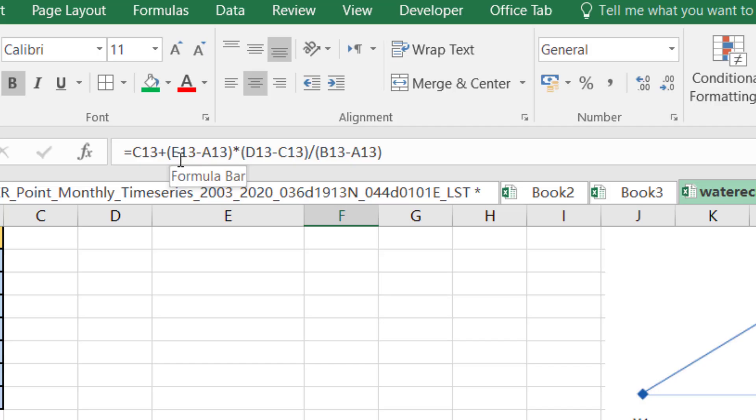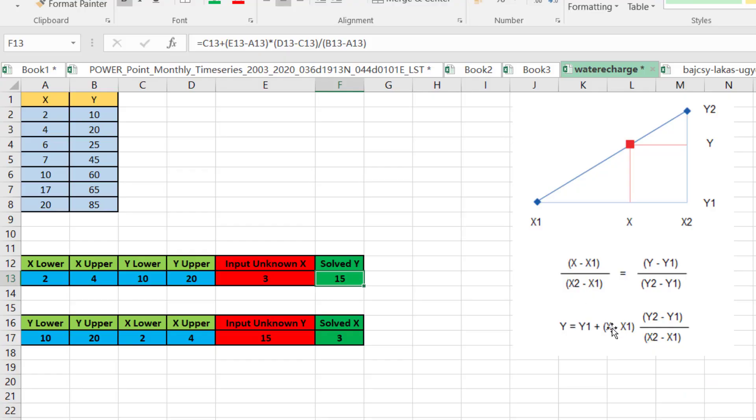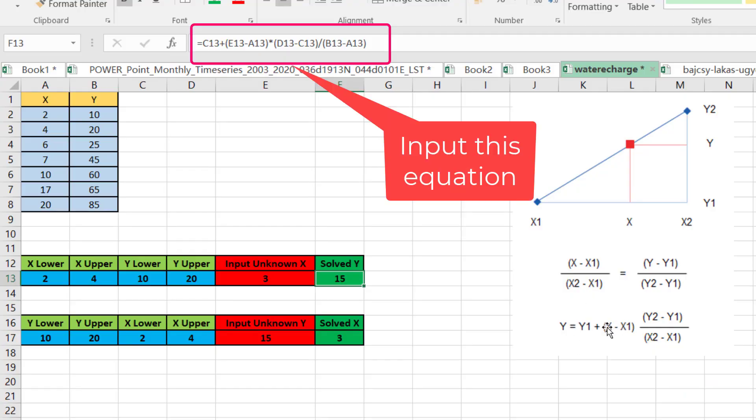That is the linear interpolation equation for finding y. Y would equal y1 plus (x minus x1) multiplied by the slope. The slope is (y2 minus y1) over (x2 minus x1).